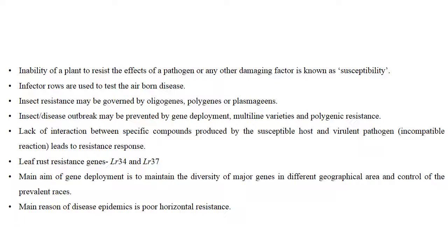Inability of a plant to resist the effect of a pathogen or any other damaging factor is susceptibility. Infector rows are used to test airborne diseases. Insect resistance may be governed by oligogenes or plasma genes. Insect or disease outbreaks may be prevented by gene deployment, multiline varieties, or polygenic resistance.